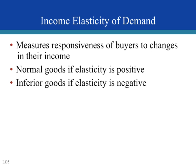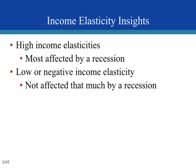Products with high income elasticities are luxury items — like a new car, jewelry, concert tickets, or eating out — and they are most affected by a recession as incomes fall. The first products we stop buying are non-necessities with high income elasticities. Products with low or negative income elasticities are not affected much by a change in income. When recession hits and incomes fall, we still have to buy toothpaste, toothbrushes, groceries, water, and gasoline.